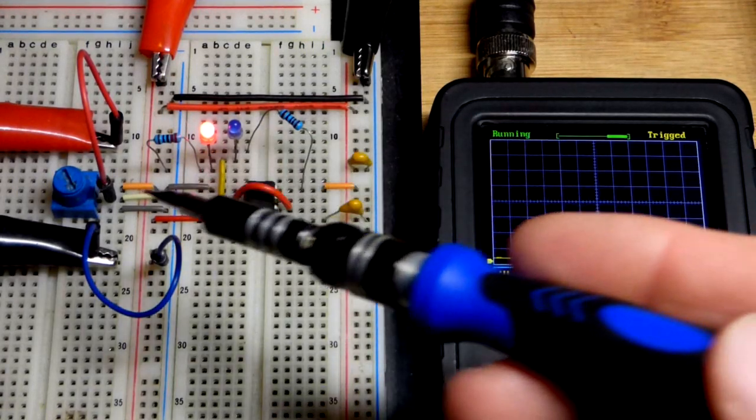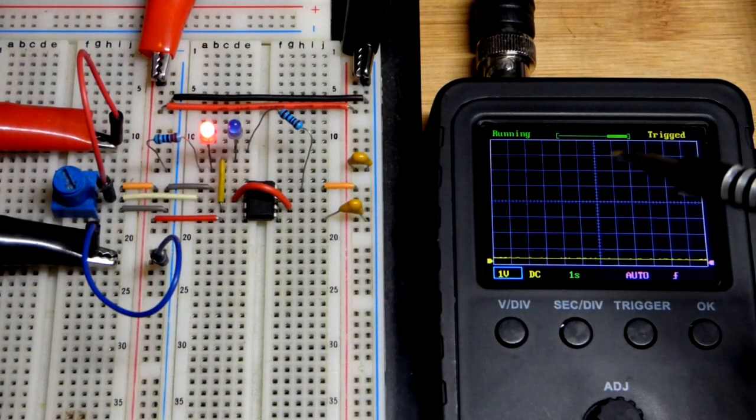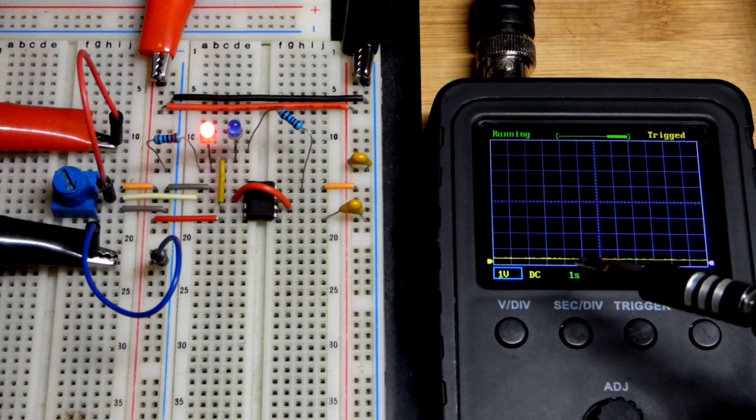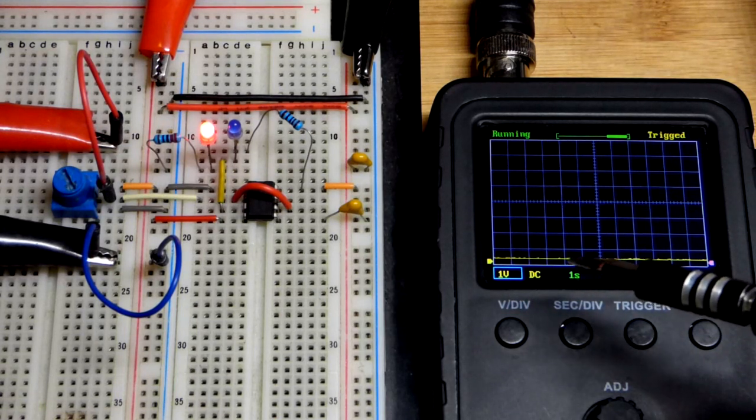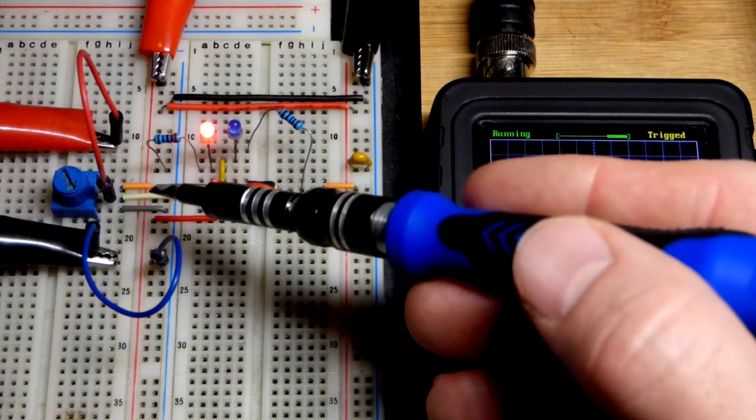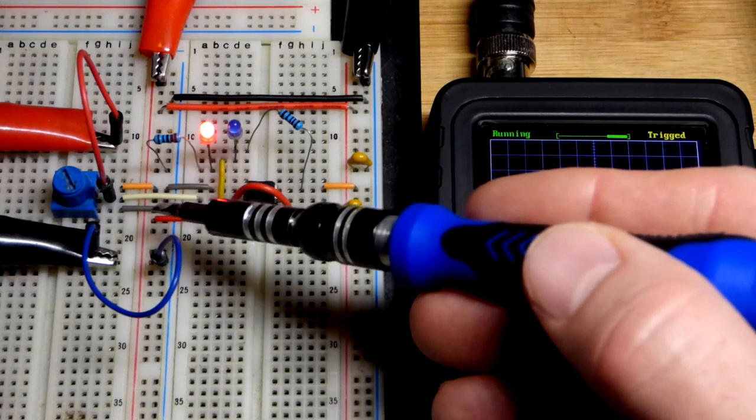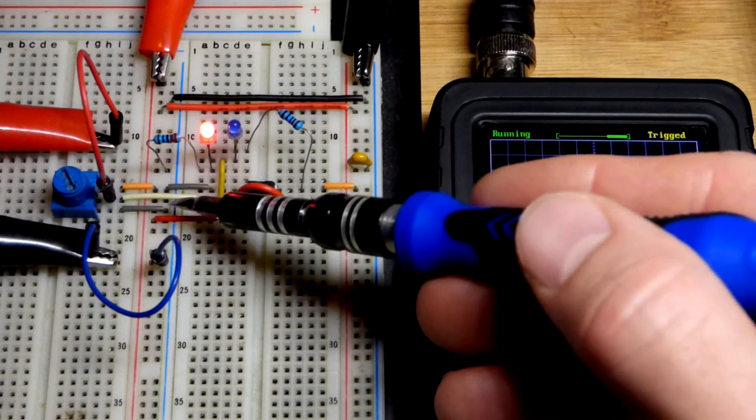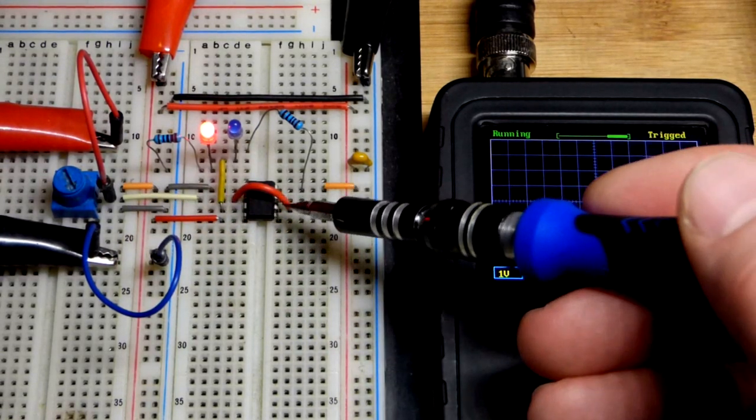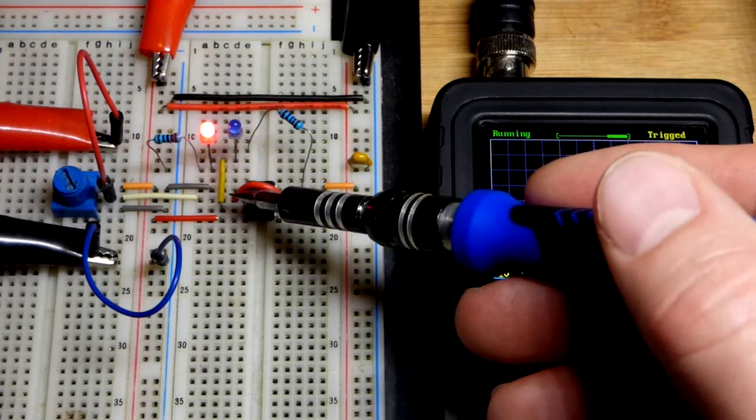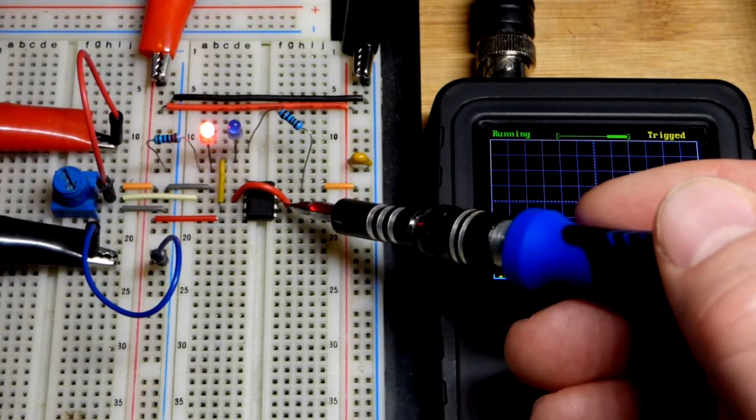So now in this video we're interested in the trim pot component. The trim pot is a variable voltage divider when you wire up both ends to the power supply rails and then the middle has an output.